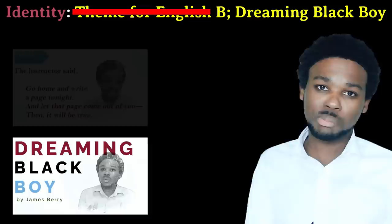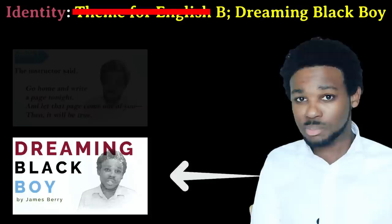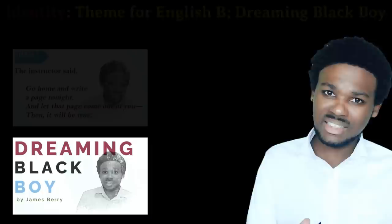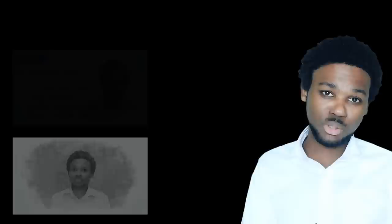Theme for English B and Dreaming Black Boy look at the racial side of things. In Dreaming Black Boy, the speaker is trapped in his blackness — he is unable to be himself and live a comfortable life because his skin color has already determined the path of his life and the difficulties he must face. In both poems, the speakers' identities lead to social isolation as well as oppression, especially in Dreaming Black Boy.